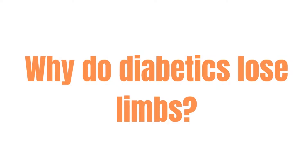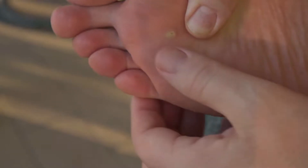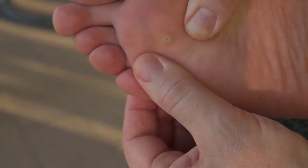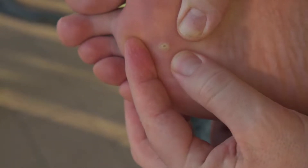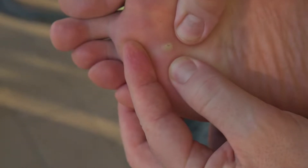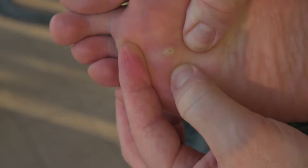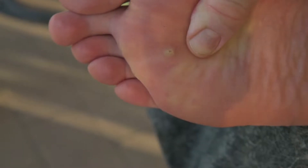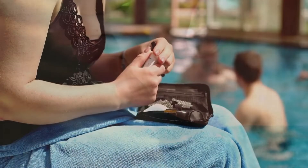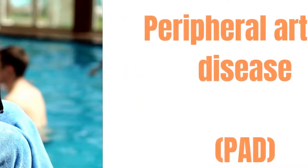Why do diabetics lose limbs? One of the worst complications of diabetes is amputation. If you have diabetes, your doctor probably told you to look at your feet every day, but you might not have known why. Continue watching to find out how diabetes can cause amputations.